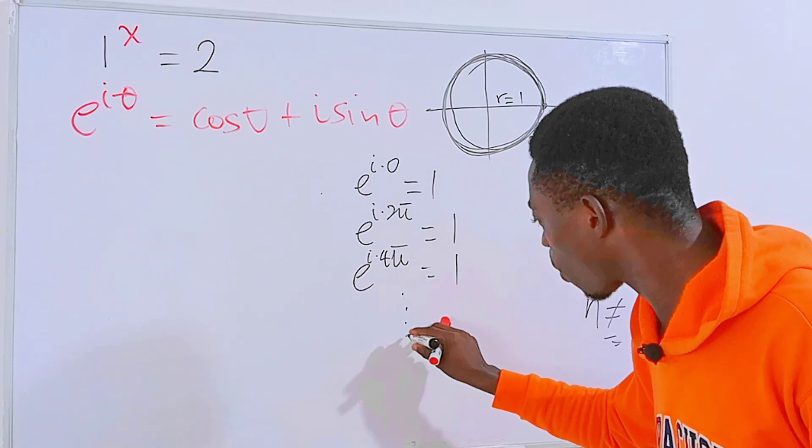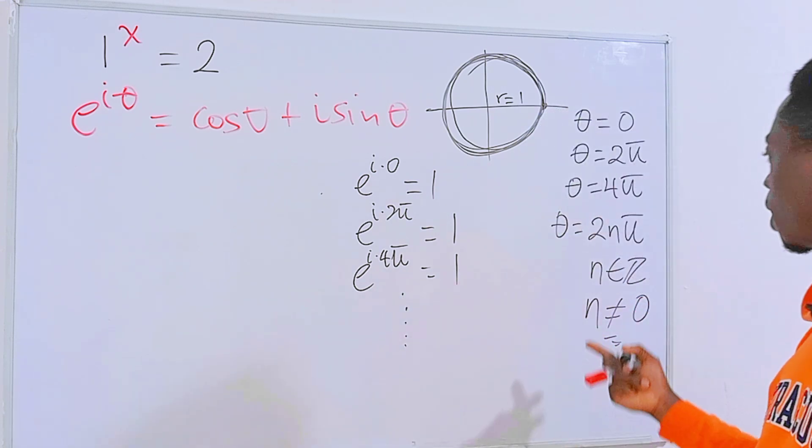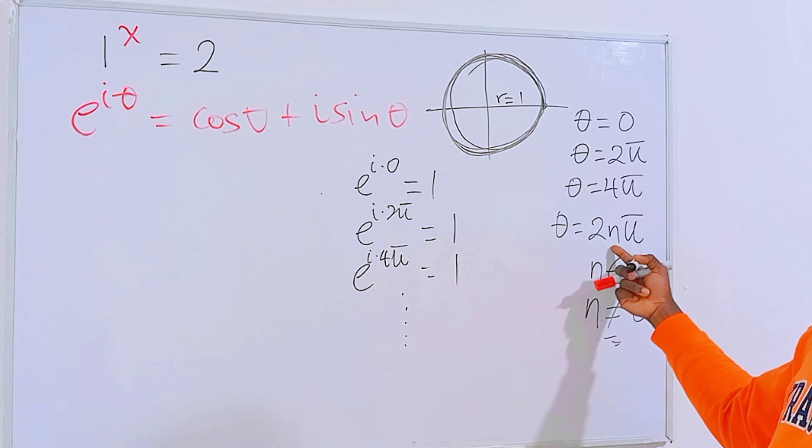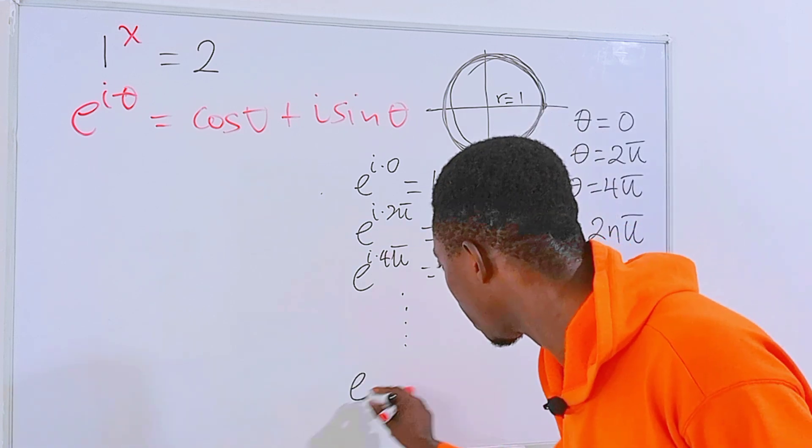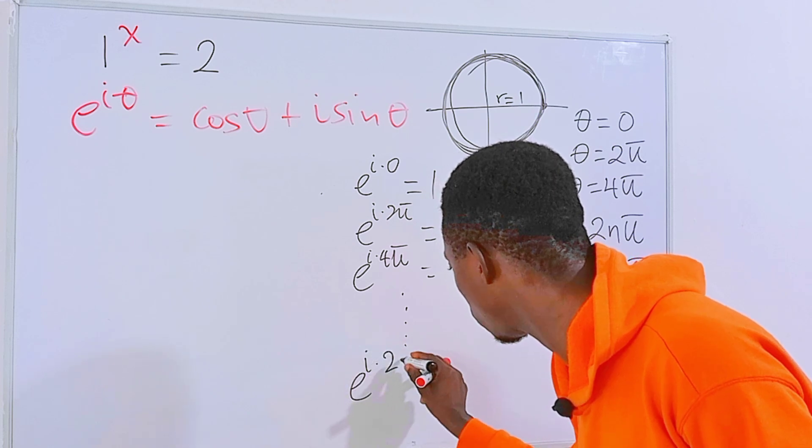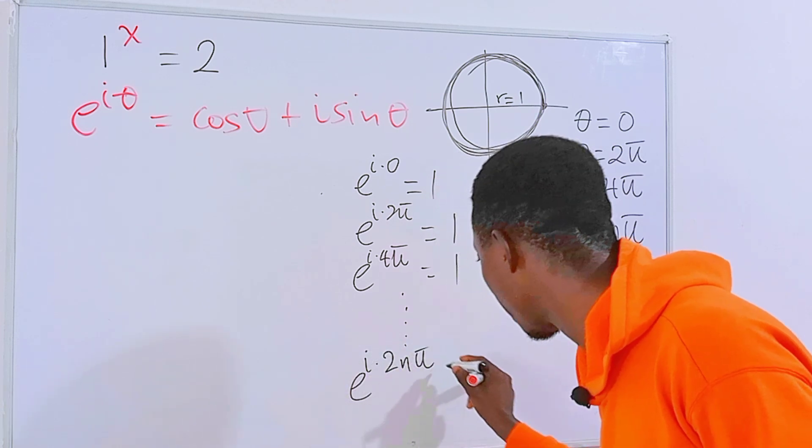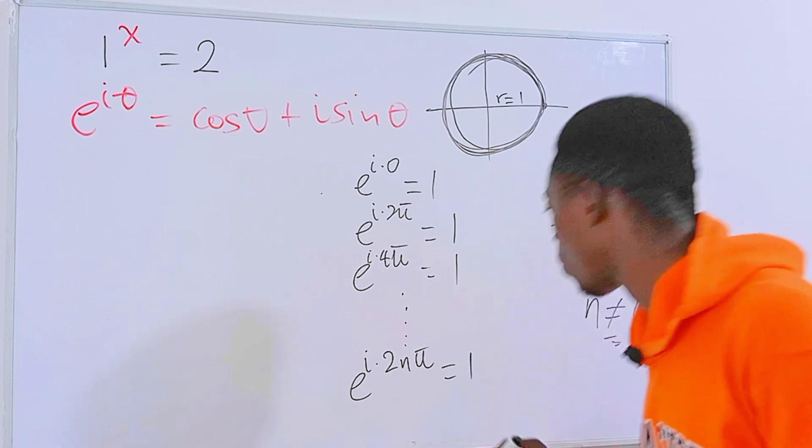In fact, you can keep on going just like that. And you see that if we put theta to be equal to 2nπ, you will have e to the power i times 2nπ equals 1.